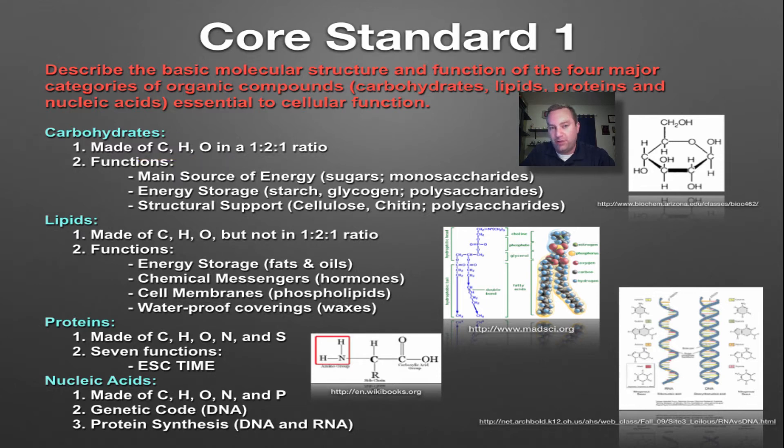There's three main functions for carbohydrates. Number one, they are the main energy source, especially monosaccharides such as glucose you see over here in this picture. Think of our monosaccharides as having this hexagon shape. The second one would be energy storage, and this would be by polysaccharides such as starch and glycogen. And then the third function would be structural support, cellulose that you find in plant cell walls, and chitin, which you'll find in the exoskeleton of insects.